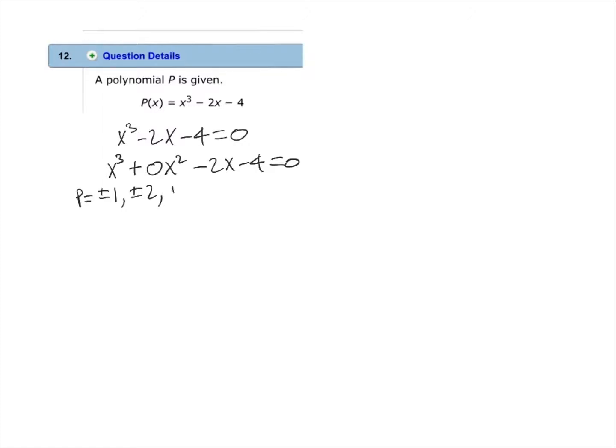Those factors would be plus or minus 1, plus or minus 2, and plus or minus 4. Then we will find all of the possible factors for the leading coefficient, which would be plus or minus 1. Then we will find all of the possible rational roots for the polynomial by finding all of the possible ratios of p over q.